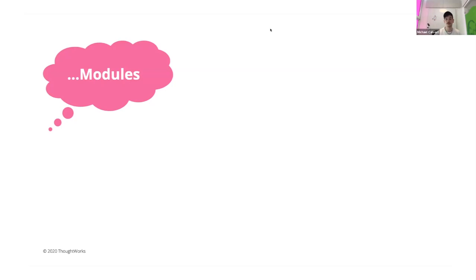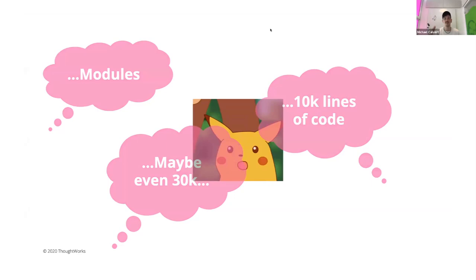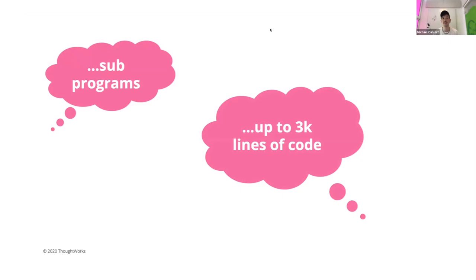We asked how large these modules normally are, and they responded: about 10,000 lines, but the big ones reach up to 30,000 lines of code. Regarding unit testing, we felt a bit taken aback by this, but we didn't give up. We asked: isn't there something smaller? They answered that modules are divided into sub programs, which kind of represent the business case. We asked how big those are — up to 3,000 lines of code. We began to get a bit sad, so we asked again: there must be something else. The client responded that there are these things called sections, which are used to structure a program.